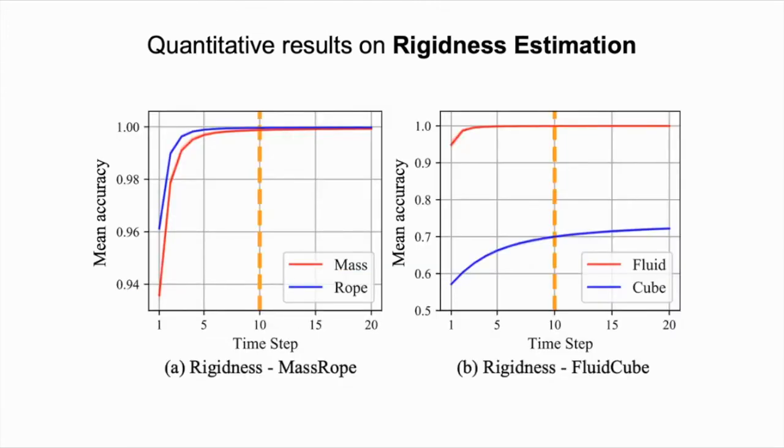Here, we show the quantitative results of our model's performance on estimating the rigidness in the rope environment and the fluid environment. The inference module was trained on inputs with only 10 time steps, shown here using the orange dashed line. But the model can extrapolate to both shorter and longer input sequences. Longer observation sequences lead to higher accuracy, which is in line with our intuition.